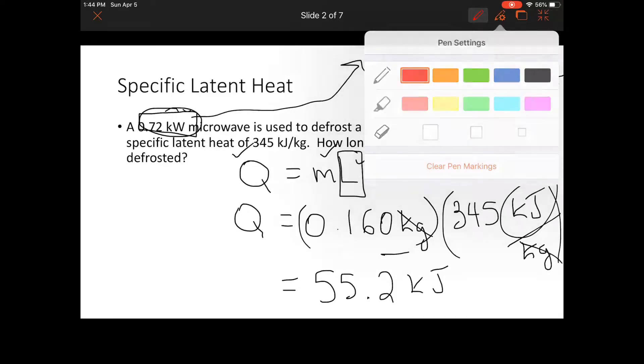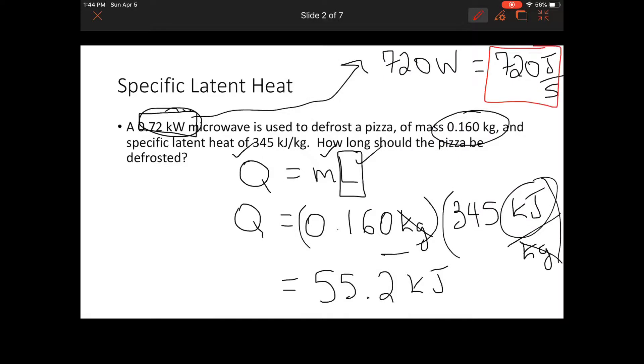So now we know we have the energy required that the pizza must absorb to defrost, and we also have the amount of energy that the microwave can deliver every second. So this becomes a fairly straightforward problem. We know the total amount of energy that we're trying to reach, and we know the amount of energy that the microwave can deliver each second, and we're trying to figure out basically how many seconds.